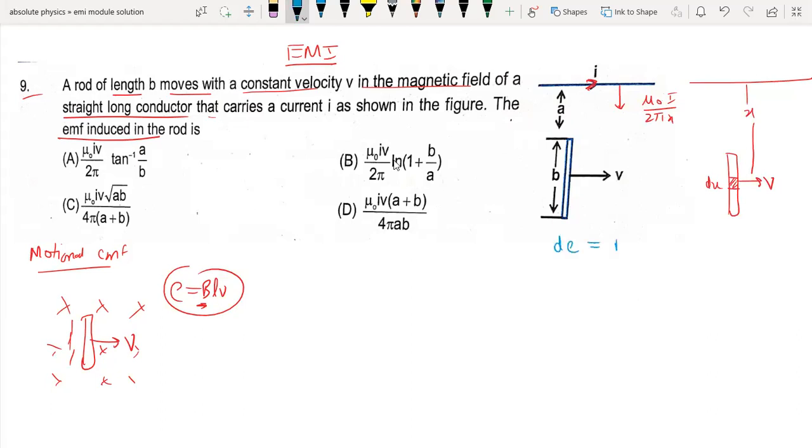So d epsilon equals B times the length times velocity, which is mu naught I upon 2 pi x into dx into v. So that's mu naught I v by 2 pi, dx by x.